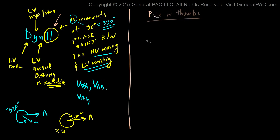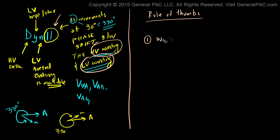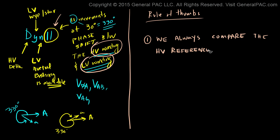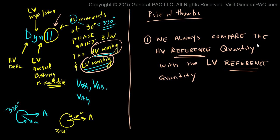So the rule of thumbs. The first rule is when we're comparing the high voltage winding with the low voltage winding, we always compare the high voltage reference quantity — and I'm going to explain this term in just a little while — with the low voltage reference quantity, when determining the phase shift.